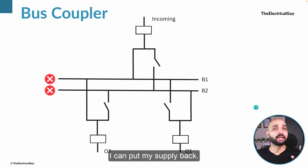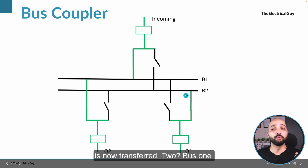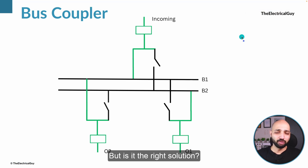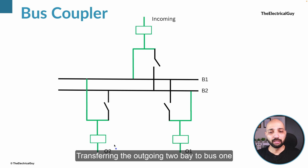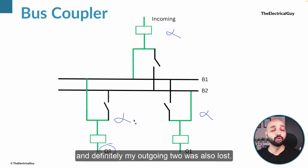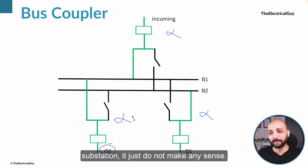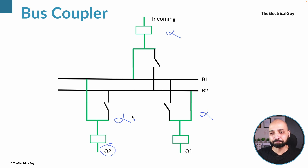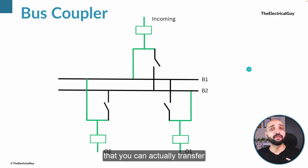Once that disconnector is closed I can put the supply back, and outgoing two is now transferred to bus one. But is this the right solution? The answer is no — because while transferring outgoing bay two to bus one we had to completely turn off the substation. The incoming was lost, outgoing one was lost, and outgoing two was also lost. It is of no use; it does not offer any flexibility. There is a better solution.